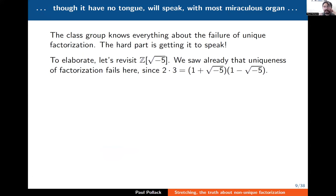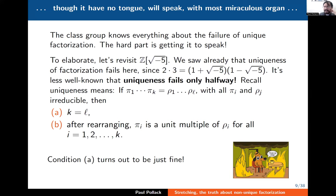For me, it's not that I don't believe the class group knows everything about the failure of unique factorization — I do believe it. But I want it to actually tell us what it knows. The hard part is getting it to speak. To give an example of what I mean, let me go back to Z[√-5]. We saw already that unique factorization fails there because of the famous example 2 × 3 = (1+√-5)(1-√-5).